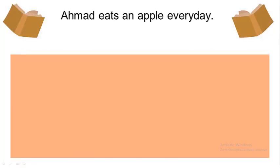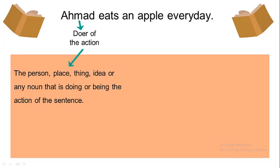Ahmad eats an apple every day. In this sentence, Ahmad is the doer of the action. But what do we mean by the doer of the action? The doer of the action is the person, place, thing, idea, or any noun that is doing or being the action of the sentence. In this sentence, Ahmad is the one who is doing the action of eating. Ahmad eats an apple every day.